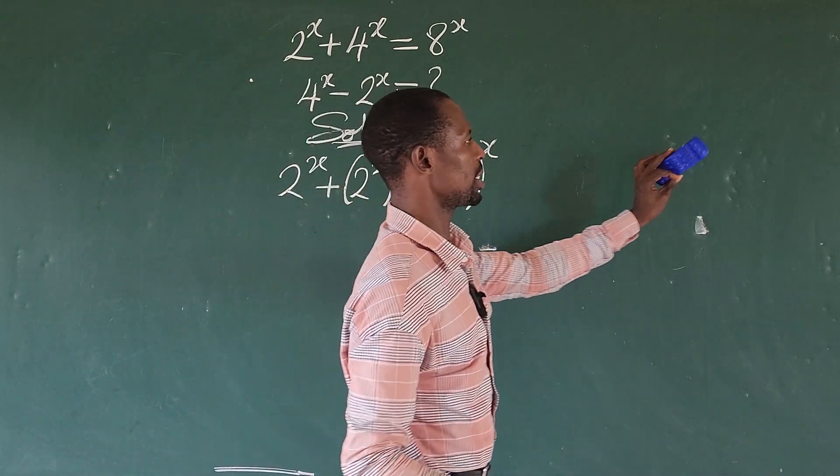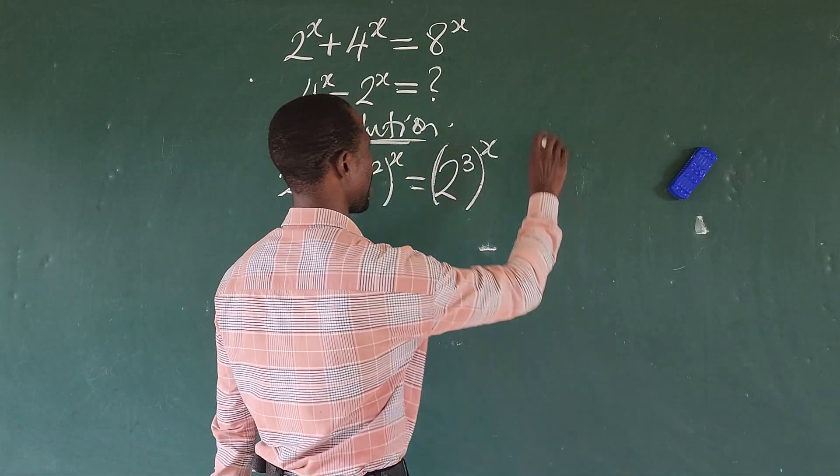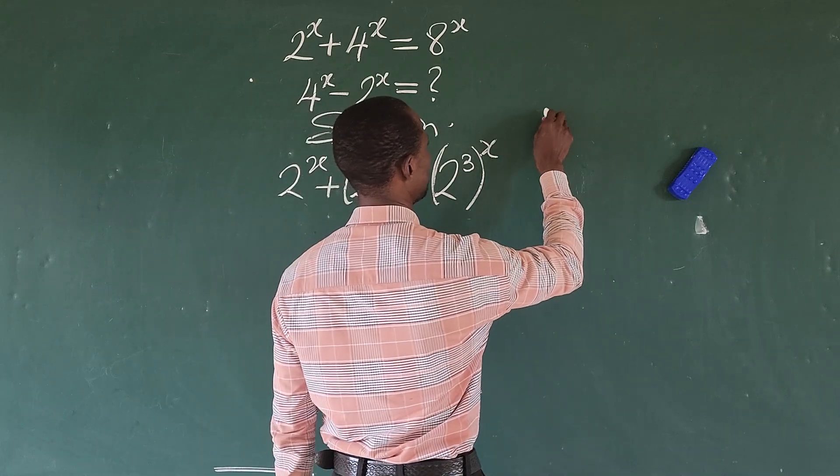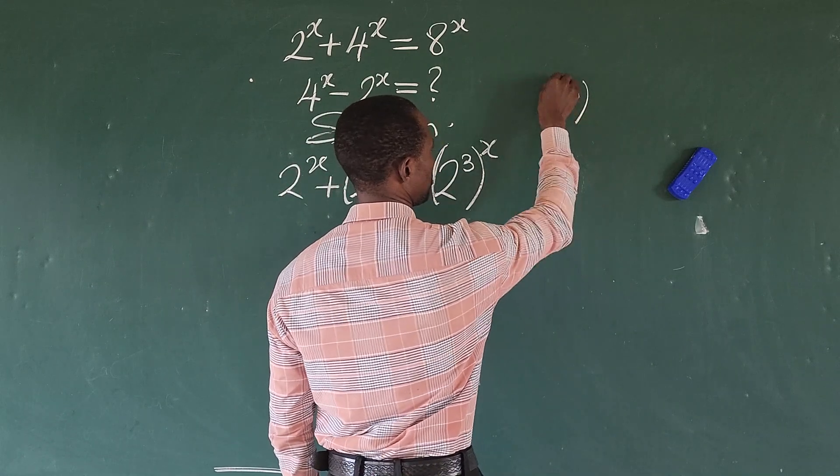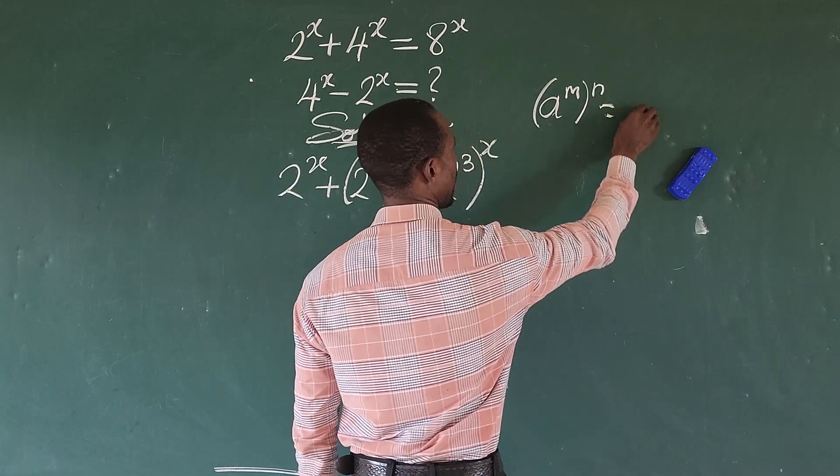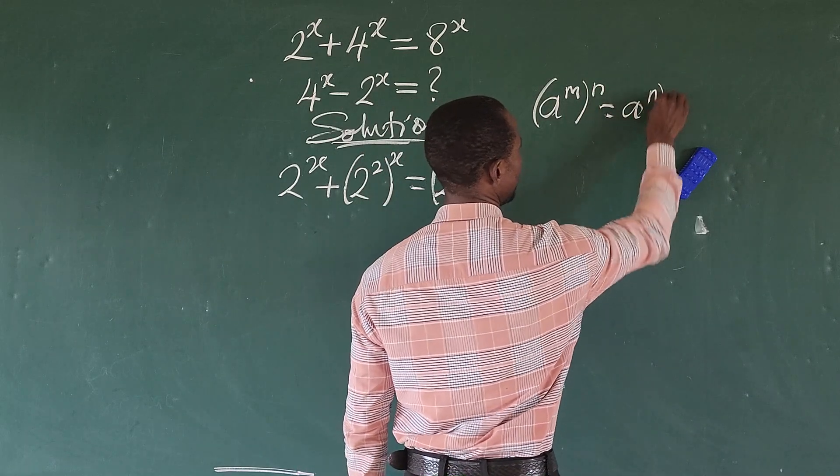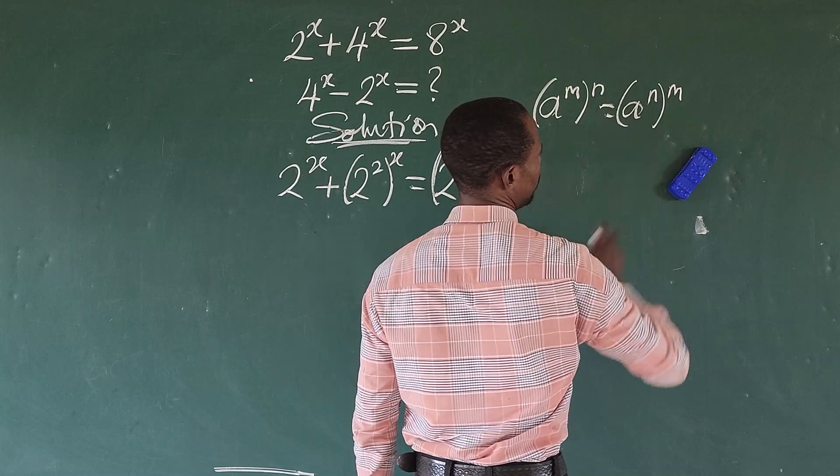Now, according to the law of indices, we all know that if you have a to the power of m bracket n, this is equal to a to the power of n bracket m, right?